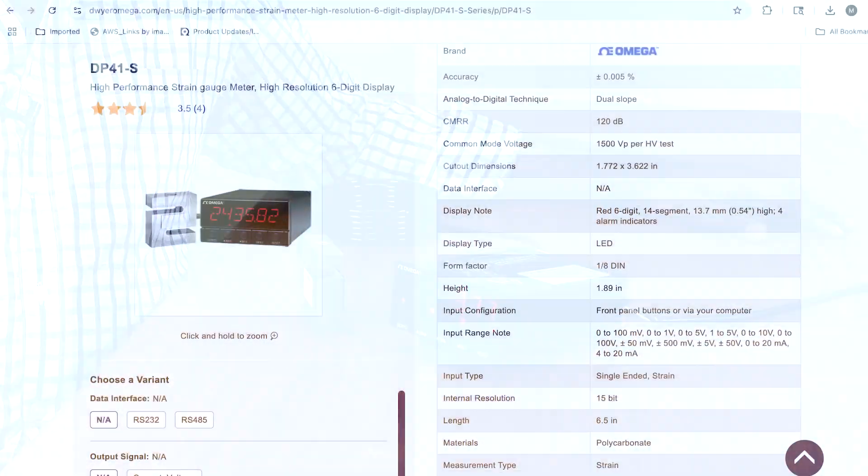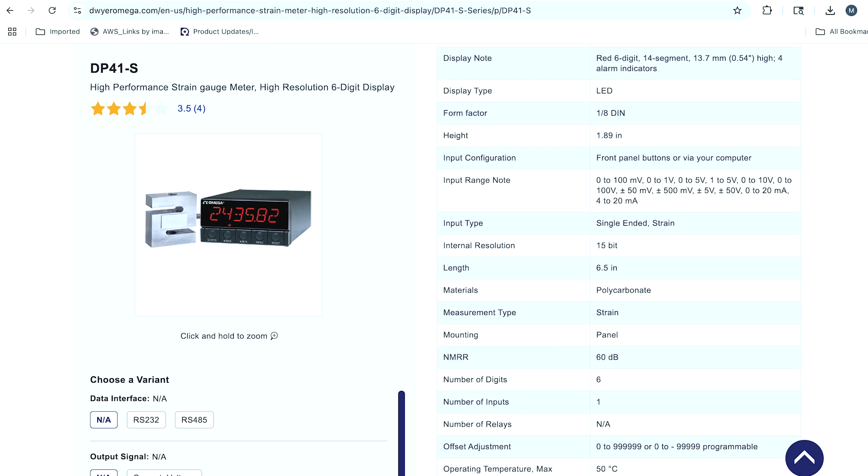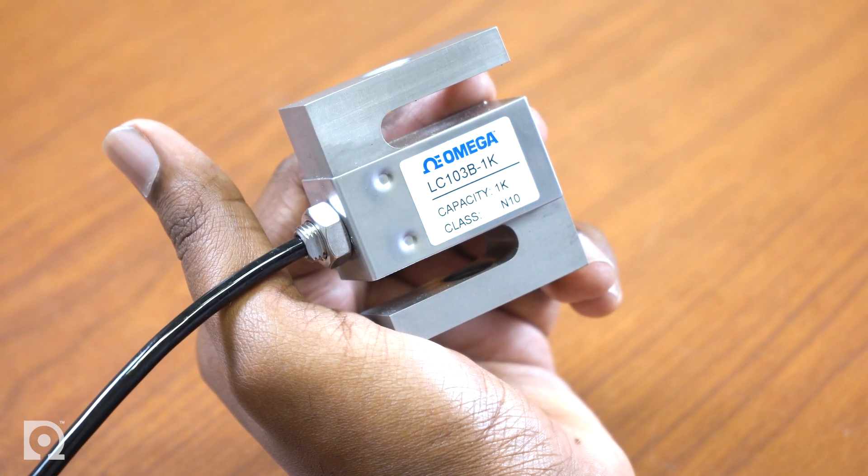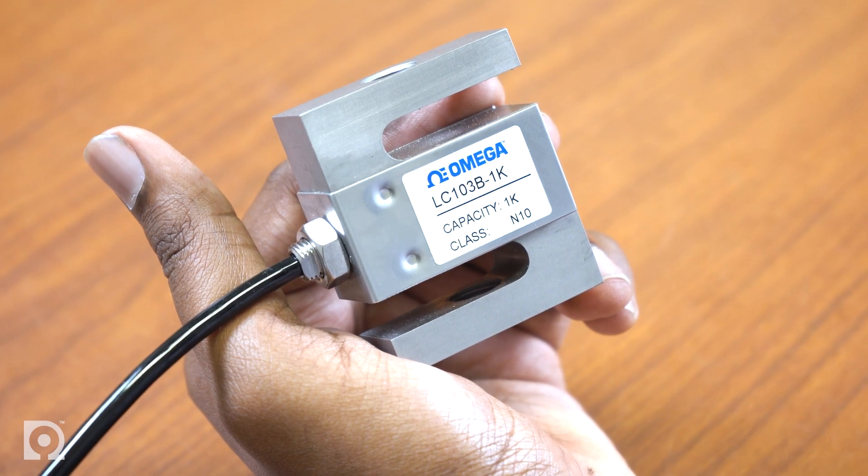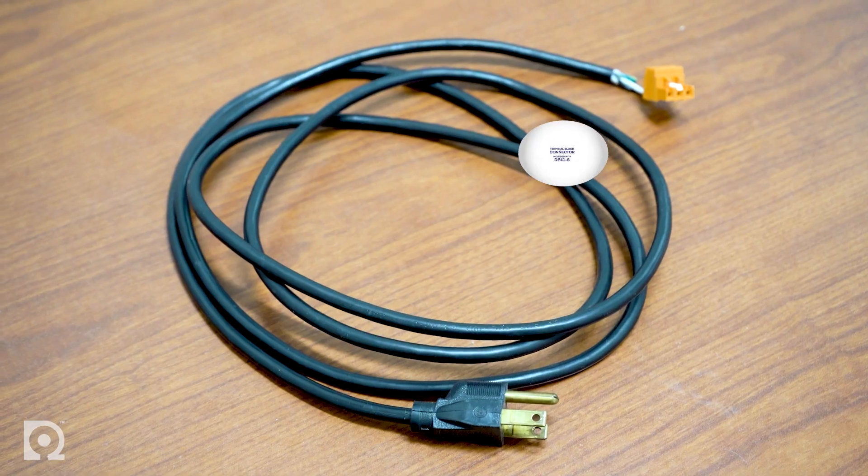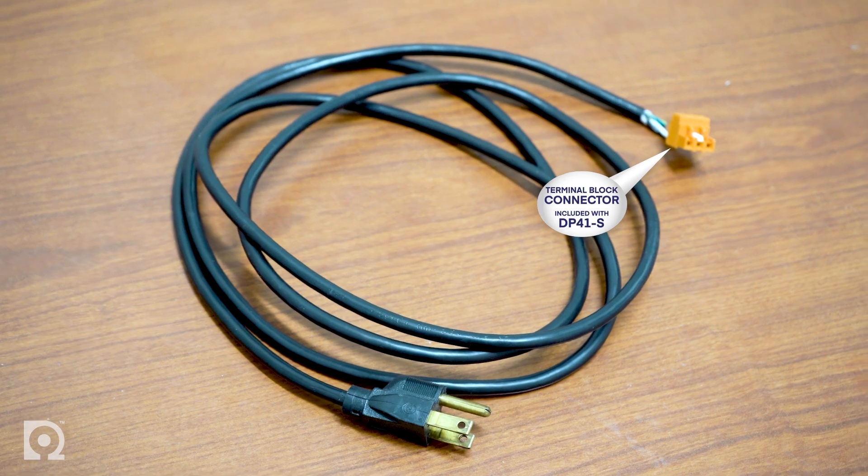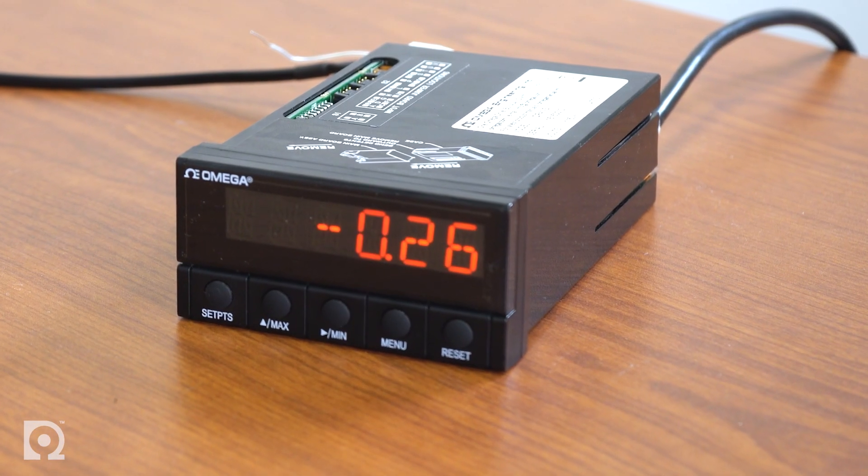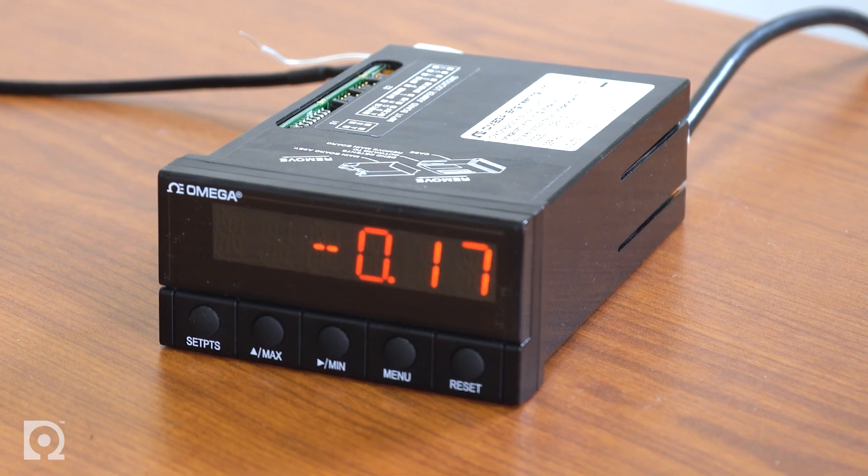The Omega DP41-S offers exceptional stability and high performance in a strain gauge meter. For this setup, we'll be using an LC-103B-1K high accuracy S-beam load cell and AC power cord that I wired to the terminal block connector included with the DP41-S. And here's the star of this video, our DP41-S series digital strain meter.